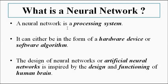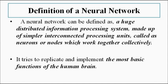The human brain is composed of billions of neuron cells. This neural network is inspired by and based on the design and functioning of the human brain. We can define it as a huge distributed information processing system made up of simpler interconnected processing units. These processing units are called neurons or nodes. The one we design is called an artificial neural network, while the brain is a biological neural network.